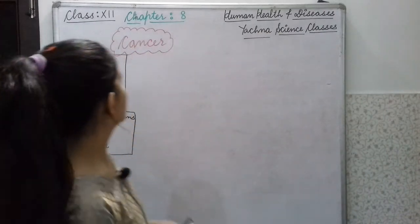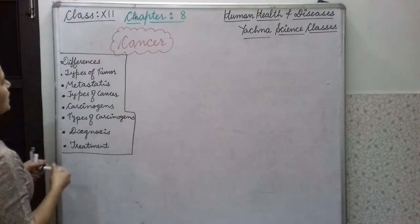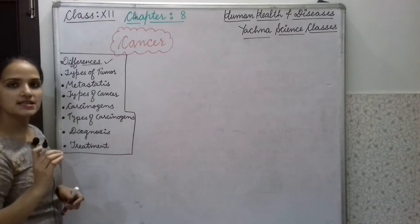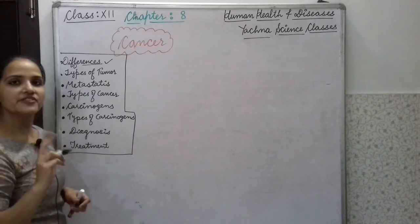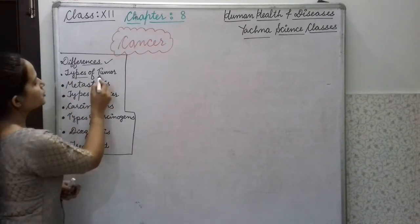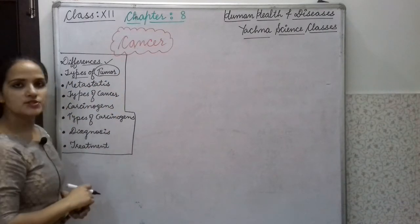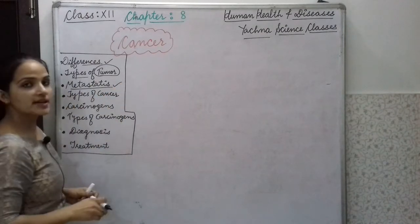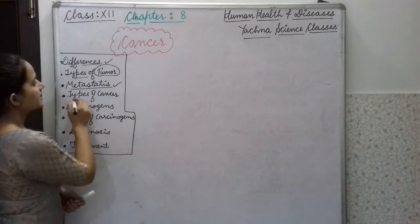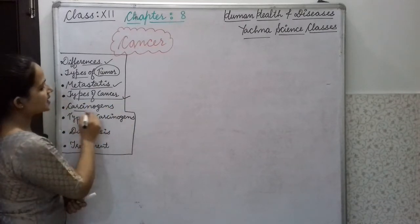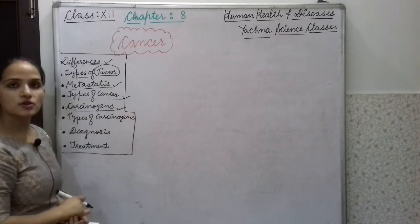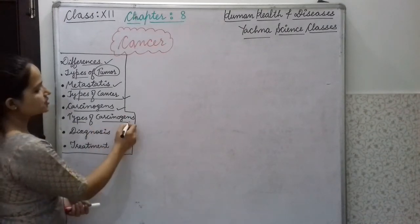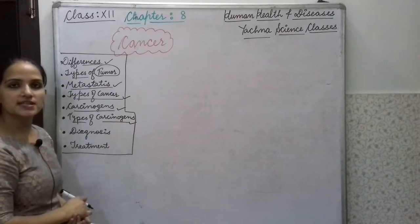First, we will discuss the differences between normal human cells and cancerous cells. Second, we will study about tumor and how many types of tumor there are. Third, metastasis — a very important stage of cancer. Then carcinogens, which are the cancer-causing agents and their types.